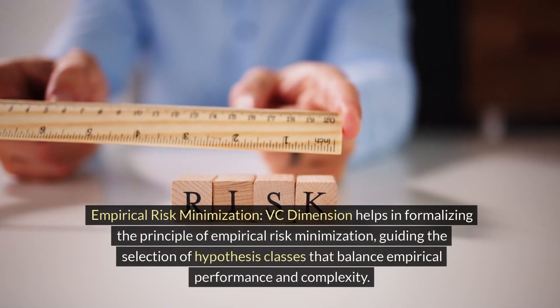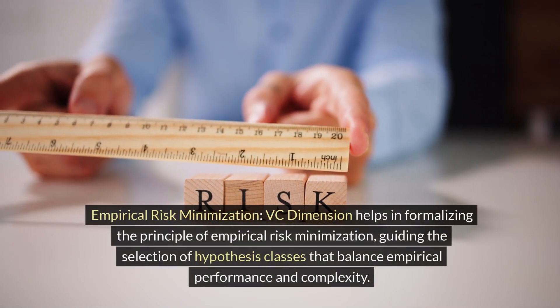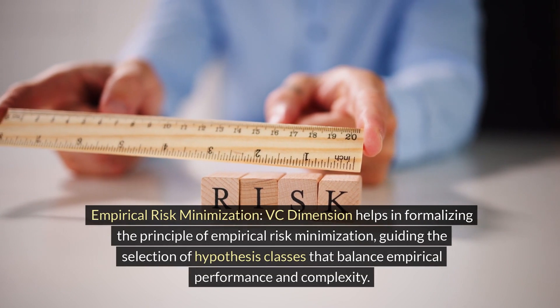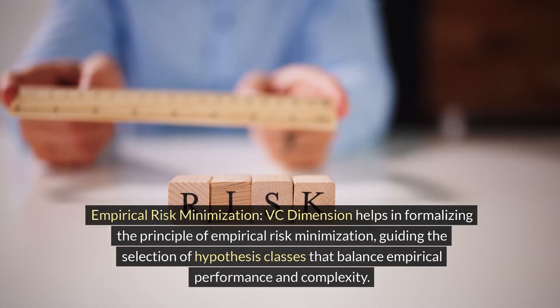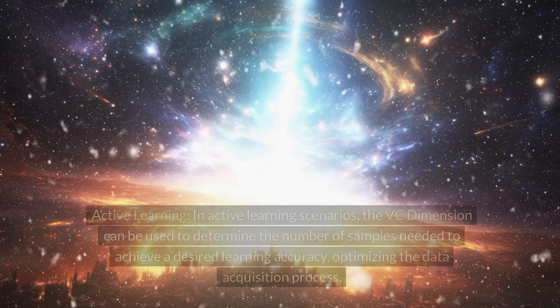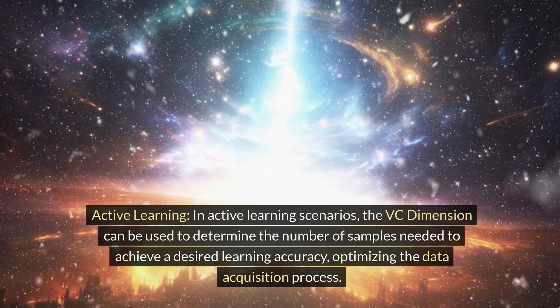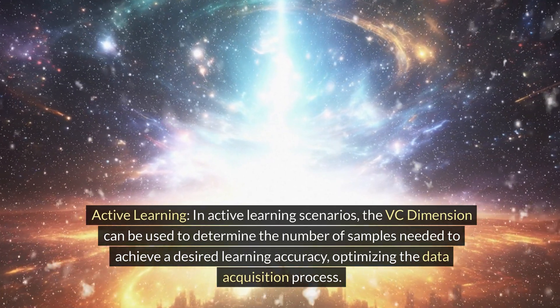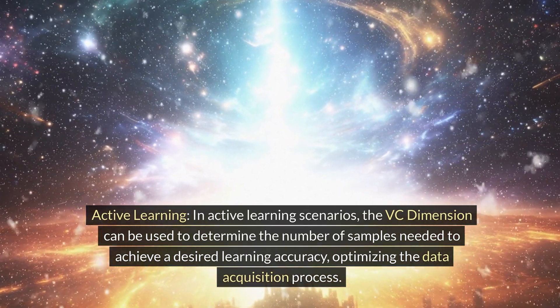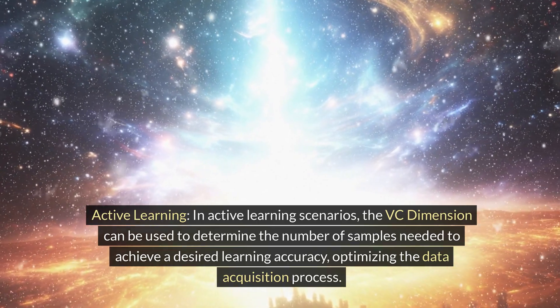Empirical Risk Minimization. VC Dimension helps in formalizing the principle of empirical risk minimization, guiding the selection of hypothesis classes that balance empirical performance and complexity. Active Learning. In active learning scenarios, the VC dimension can be used to determine the number of samples needed to achieve a desired learning accuracy, optimizing the data acquisition process.